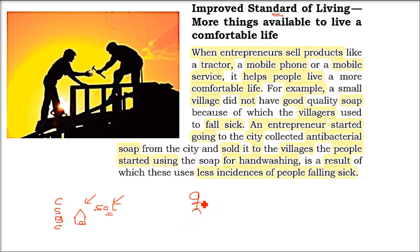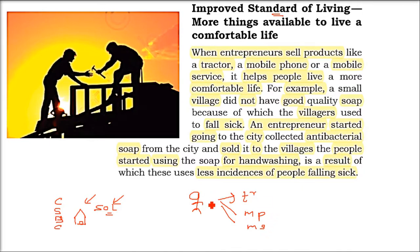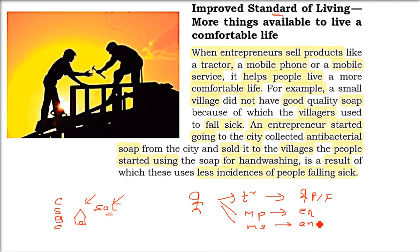So when the entrepreneur sells products or provides services — for example, a tractor, a mobile phone, or even mobile services like Vodafone, Airtel, or phones like Samsung or iPhones — the people who are buying them are benefited. The farmer will be benefited by the tractor; mobile services benefit everyone. The life of people will become easy and comfortable.